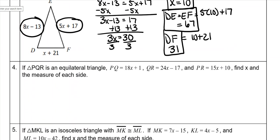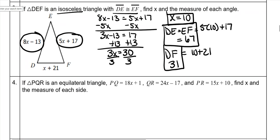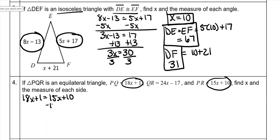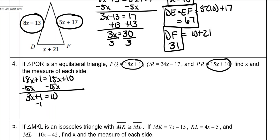Now this one is an equilateral triangle. It's not drawn for you, but it tells you it's equilateral, which means you choose any two sides and set them equal. I normally do the ones with the smaller numbers just to make life easier. Subtract 15x from both sides — 3x plus 1 equals 10. Subtract 1 from both sides — 3x equals 9. Divide both sides by 3, so x is 3.